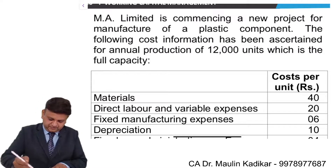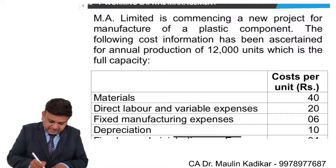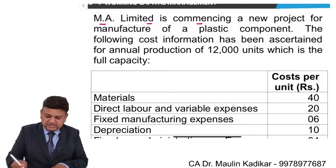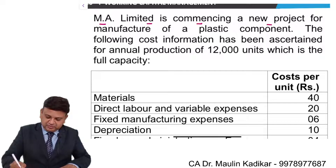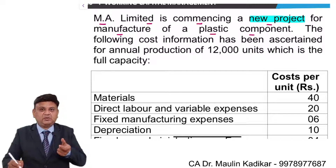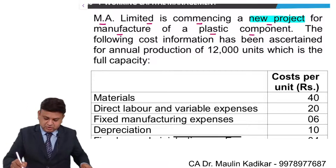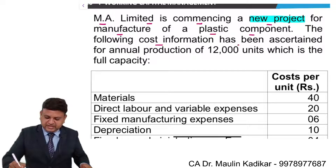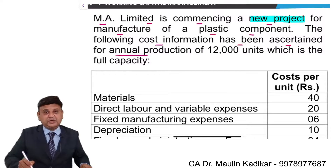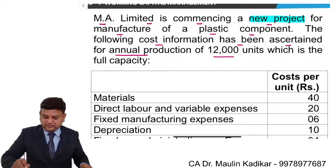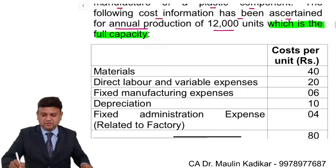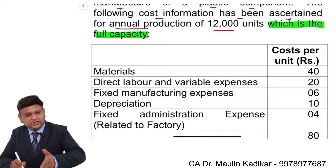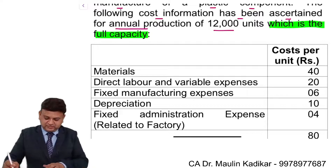Let us see the next question. MA Limited is commencing a new project — highlight the portion 'new project' — for manufacturing of plastic components. The following cost information has been ascertained for annual production of 12,000 units, which is the full capacity. So at full capacity of 12,000 units, cost per unit is given.